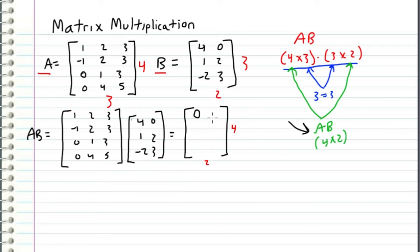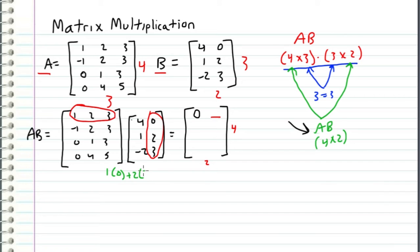Now I move to the first row, second column of the product matrix. I take the first row of A and the second column of B, and compute the dot product: one times zero, plus two times two, plus three times three, which equals zero plus four plus nine, which equals 13. So I enter 13 in that position.